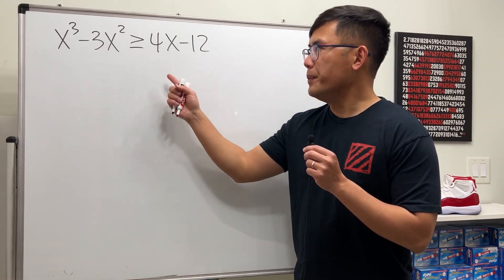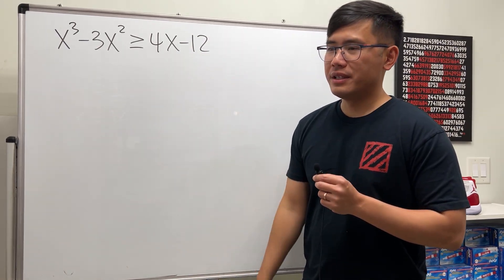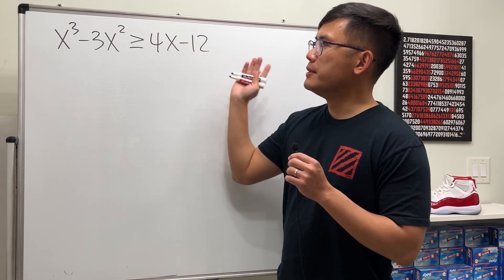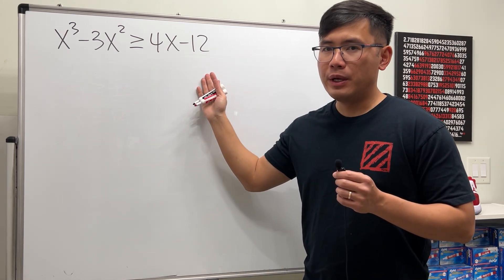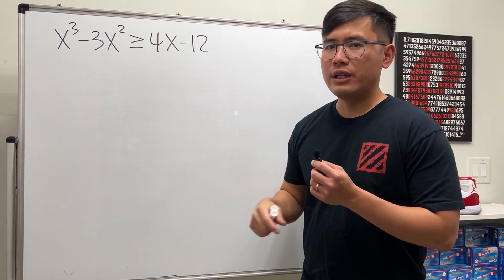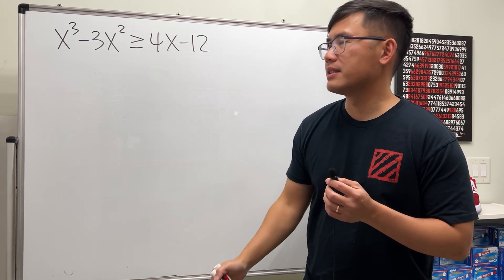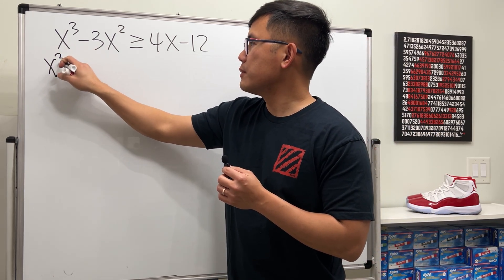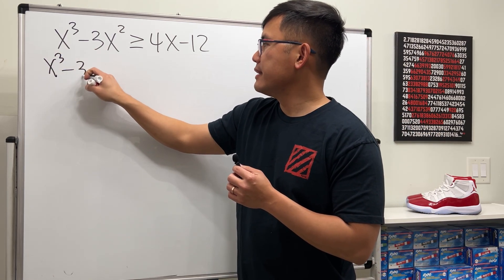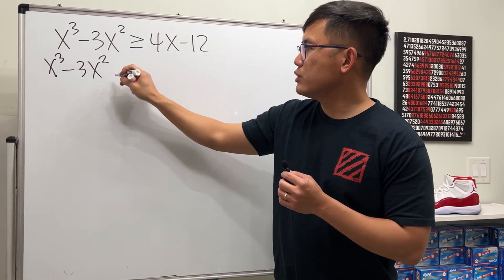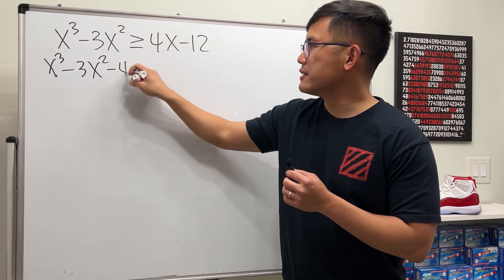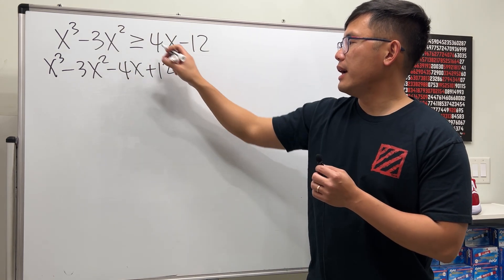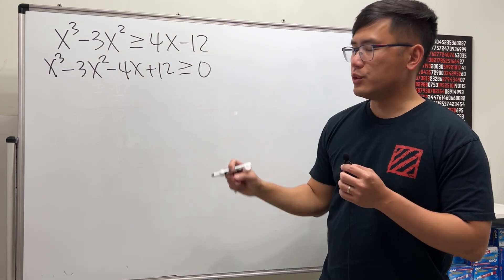We'll solve this cubic inequality. Let's do it the safe way — move these two terms to the other side, make one side zero, then factor it, and do a sign chart. So here we have x³ minus 3x² minus 4x plus 12, and this is still greater than or equal to zero.